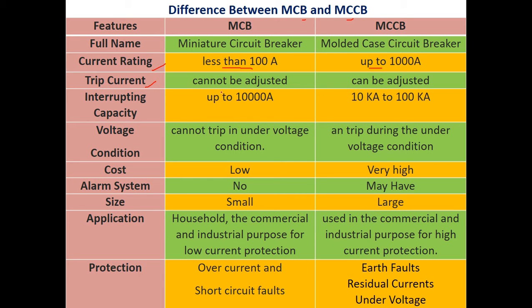Regarding trip current adjustment, the trip current cannot be adjusted with MCB, whereas the trip current can be adjusted with MCCB. For interrupting capacity, the interrupting capacity of MCB is up to 10,000 amperes, whereas for MCCB it is in the order of 10 kilo-amperes to 100 kilo-amperes.